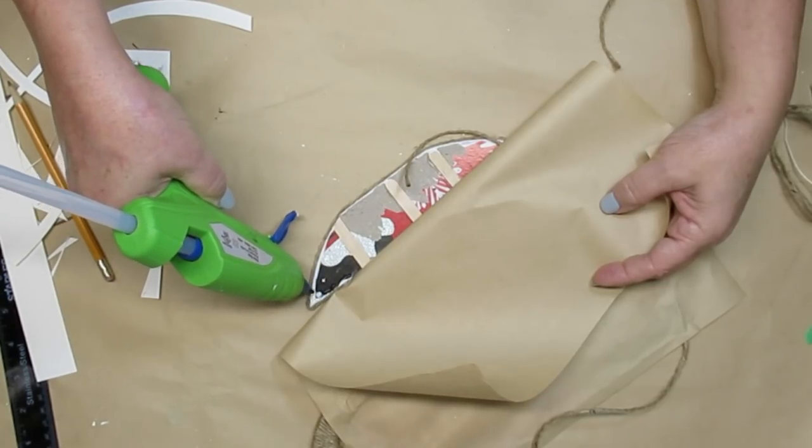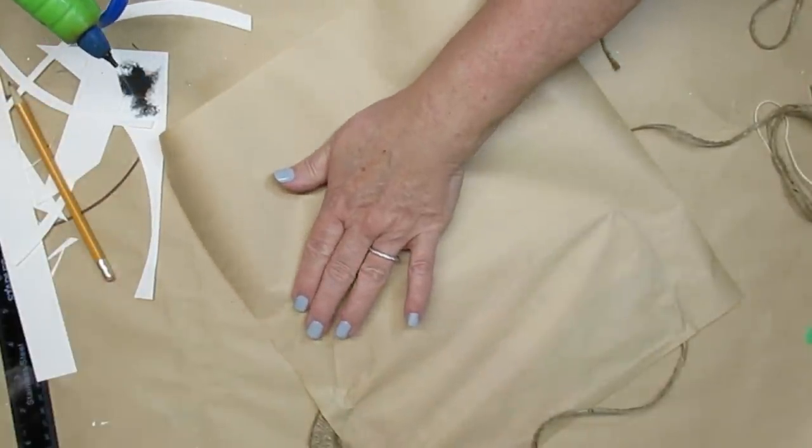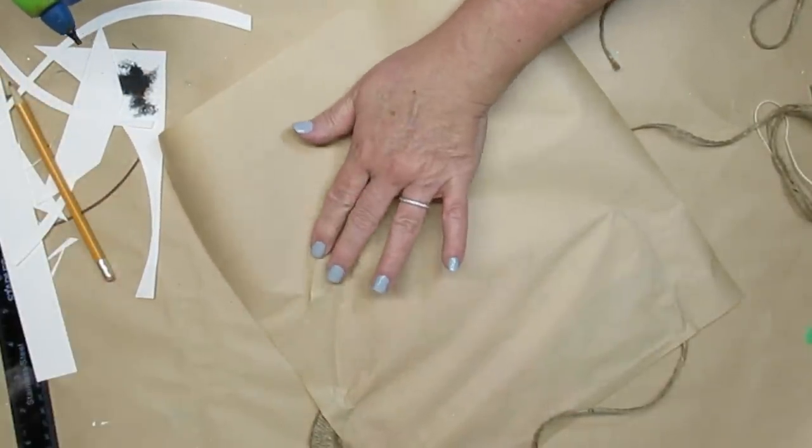To cover up the back part and especially the glitter on it, I'm just going to use some hot glue and some craft paper. Then I'll use my craft knife to trim off the edge.